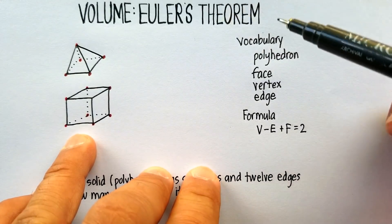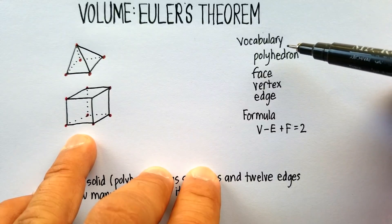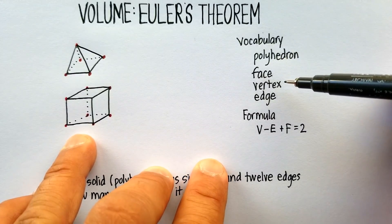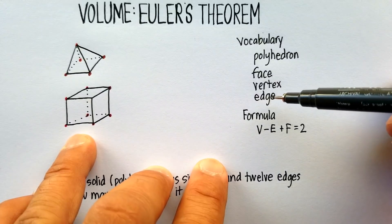And in this video, I'd like to go over some vocabulary. And the vocabulary is polyhedron, face, vertex, vertices plural, and edge.